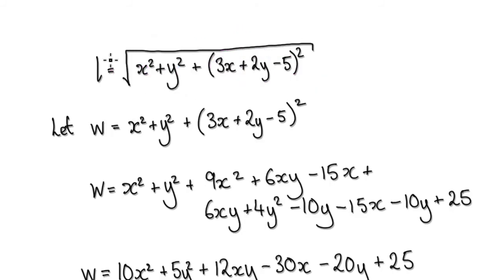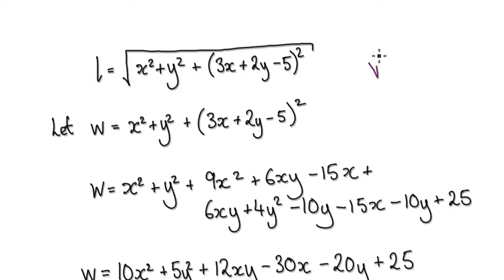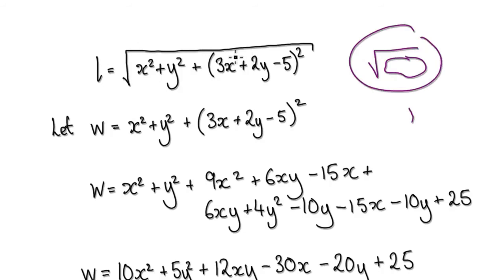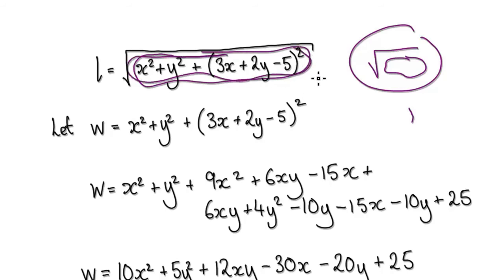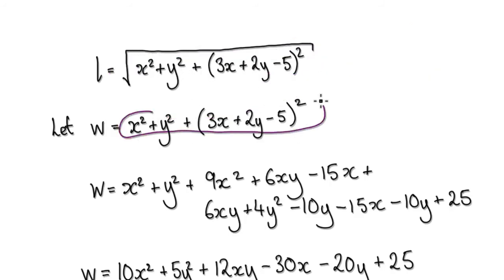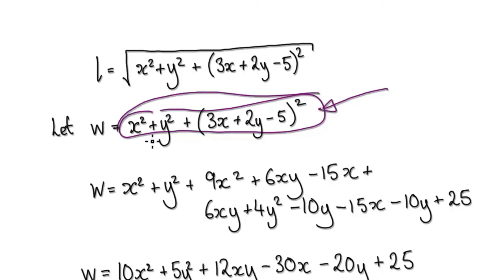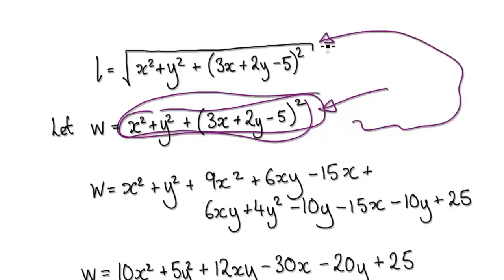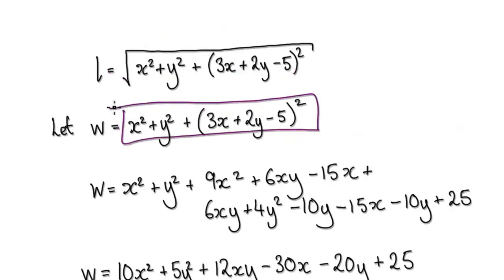So you're trying to minimize the length — minimize this whole expression. When you're trying to minimize a square root, just concentrate on minimizing what's inside the square root, because the minute you minimize what's inside, you'll automatically minimize the whole thing. So let W be what's inside the square root, and let's just minimize W.